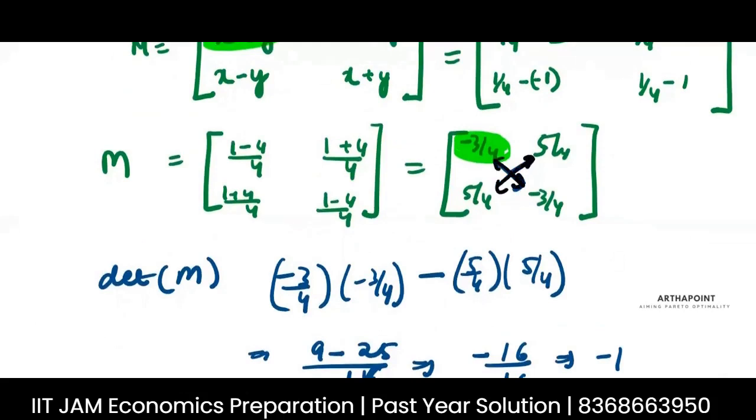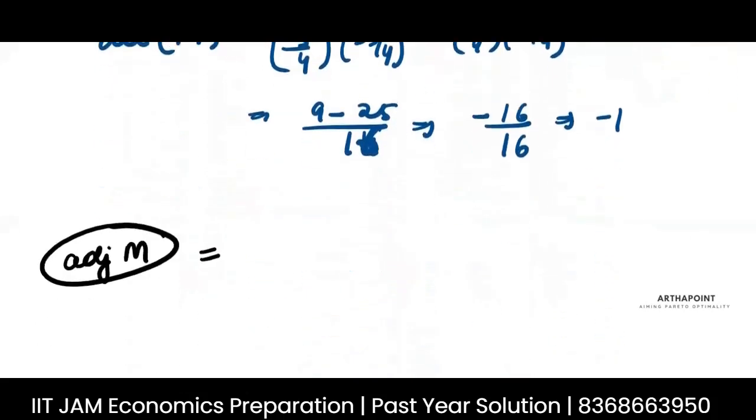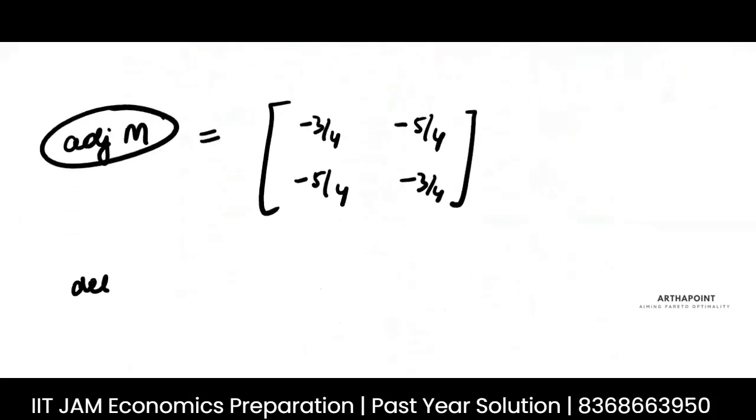So these two will change their position and these two will change their sign. So we will have minus 3 by 4, minus 3 by 4, minus 5 by 4, minus 5 by 4.